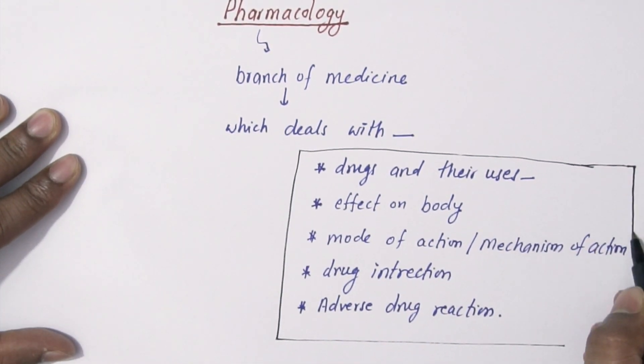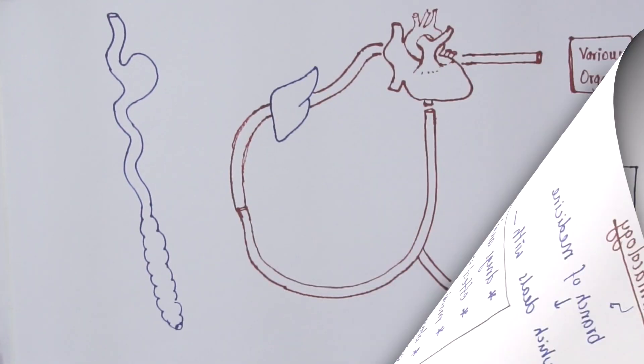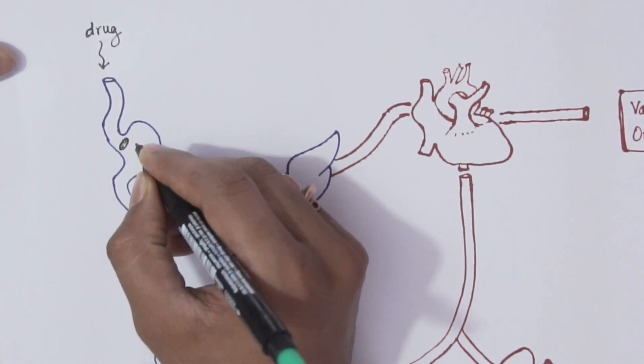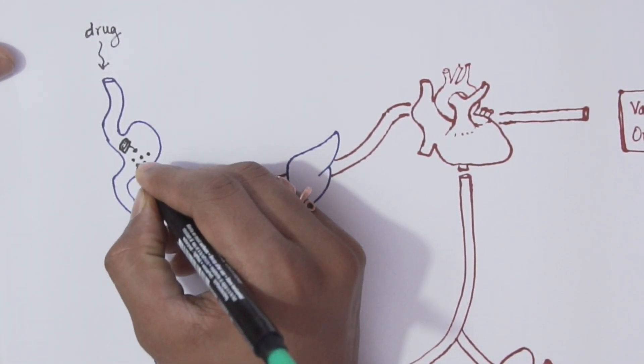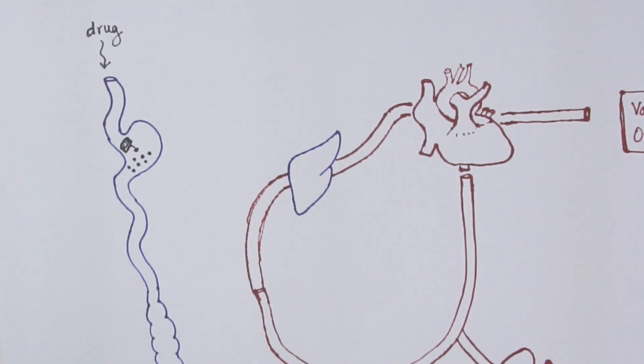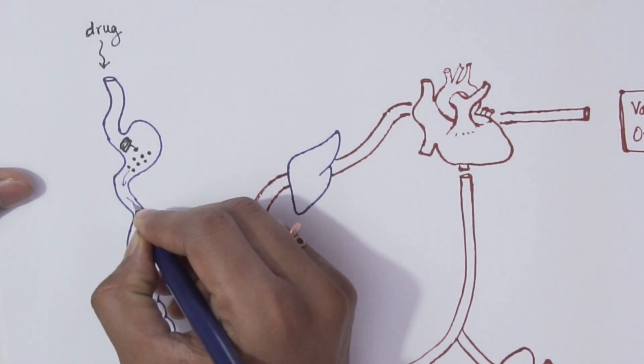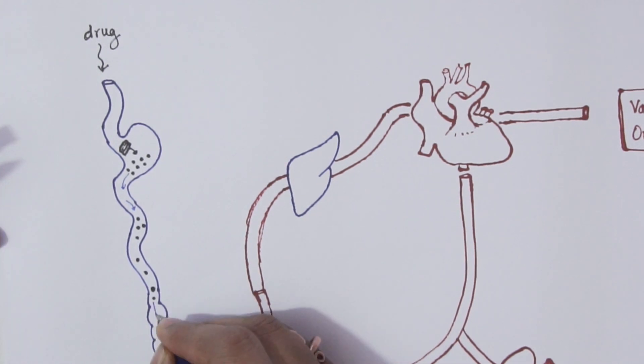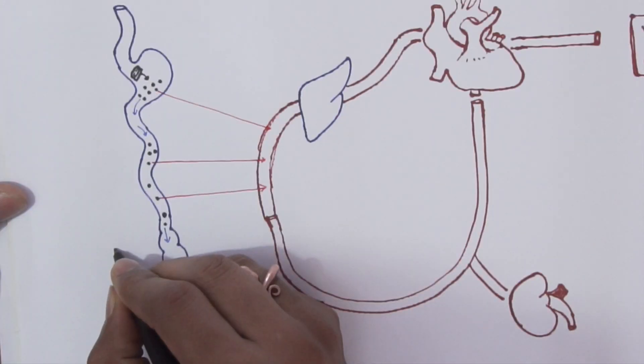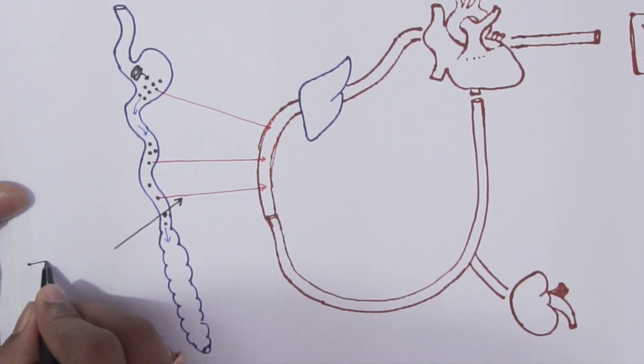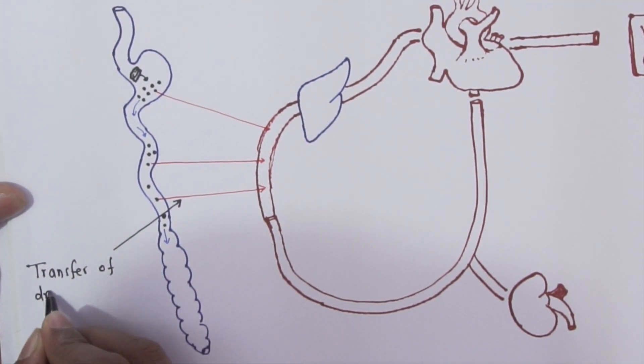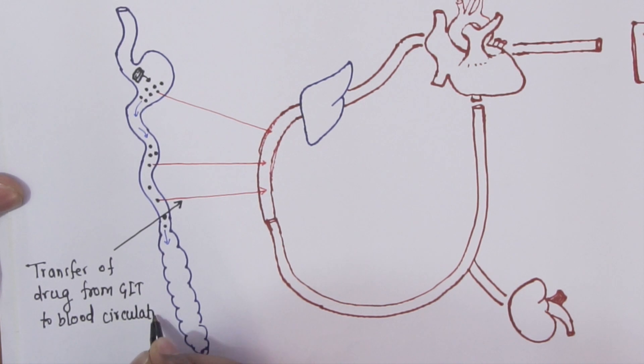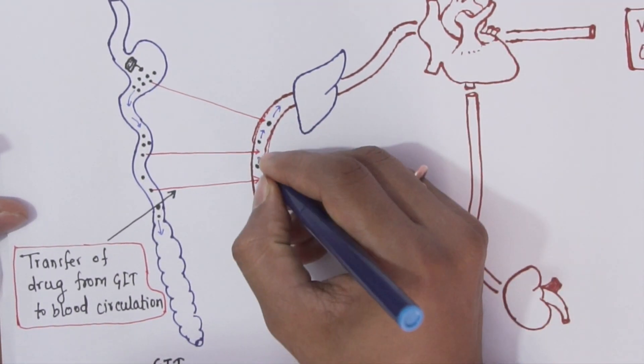In this diagram, GIT and cardiovascular system has been shown side by side. Once the drug will enter inside GIT, the molecular form of drug will get separated from dosage form. This molecular form of drug will then get transported to the systemic circulation. This transfer of drug mainly takes place from the small intestine and to some extent from the stomach.